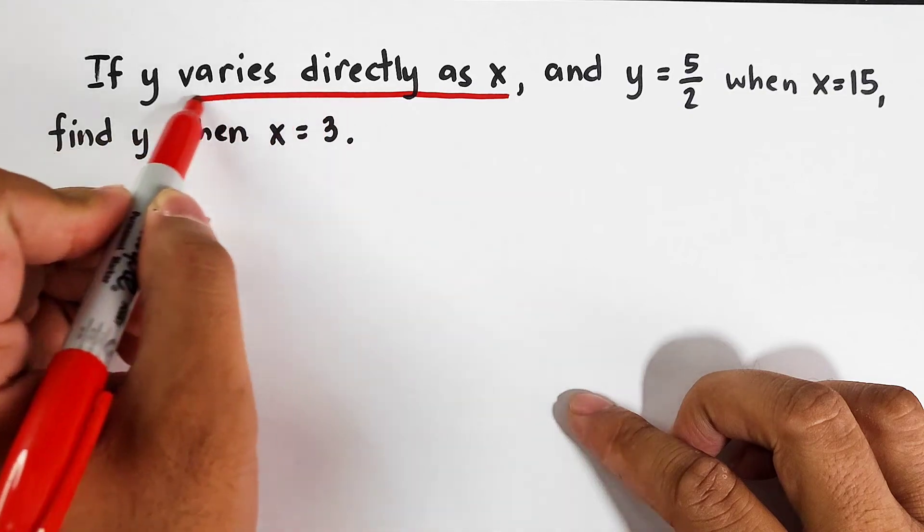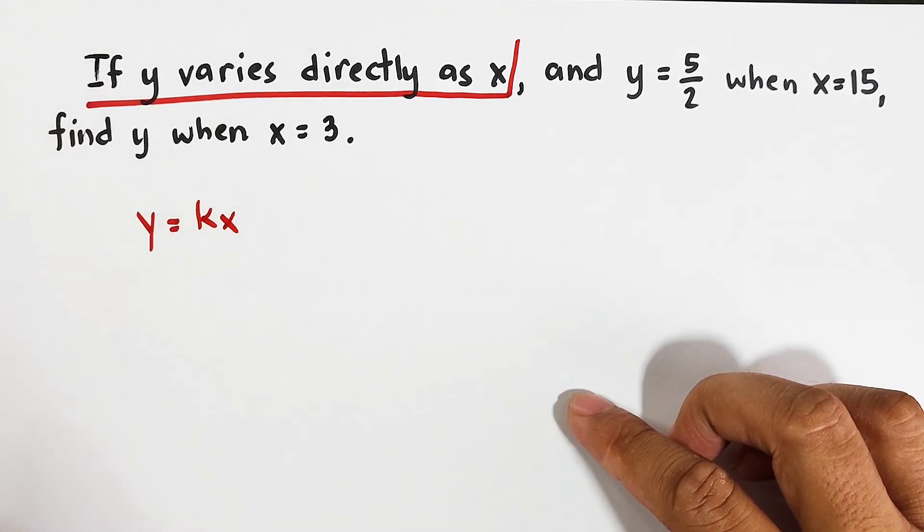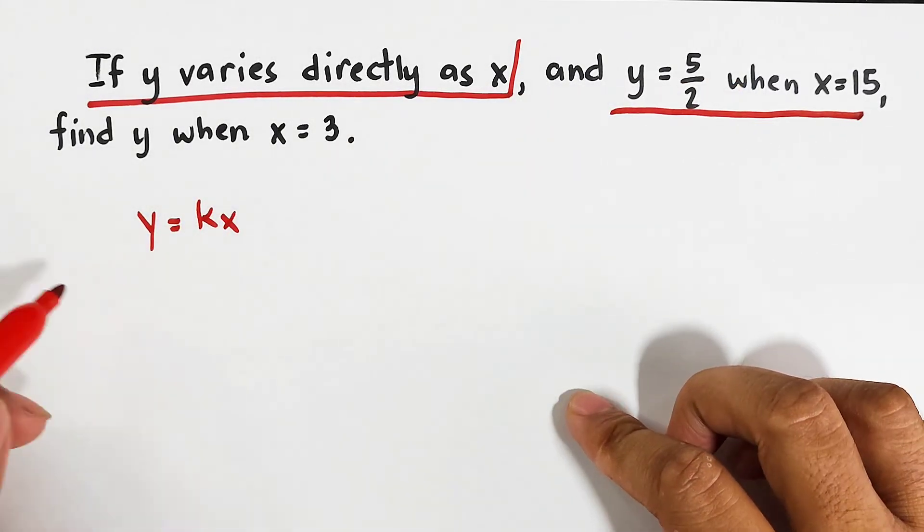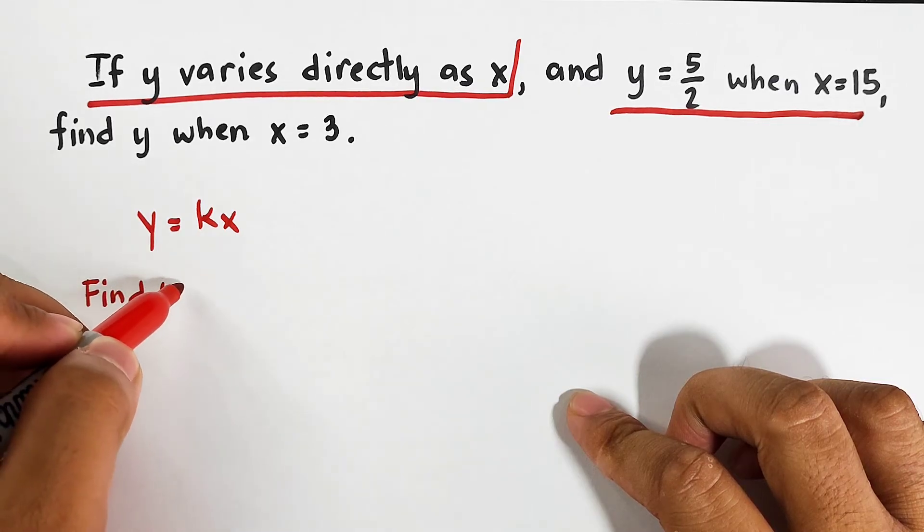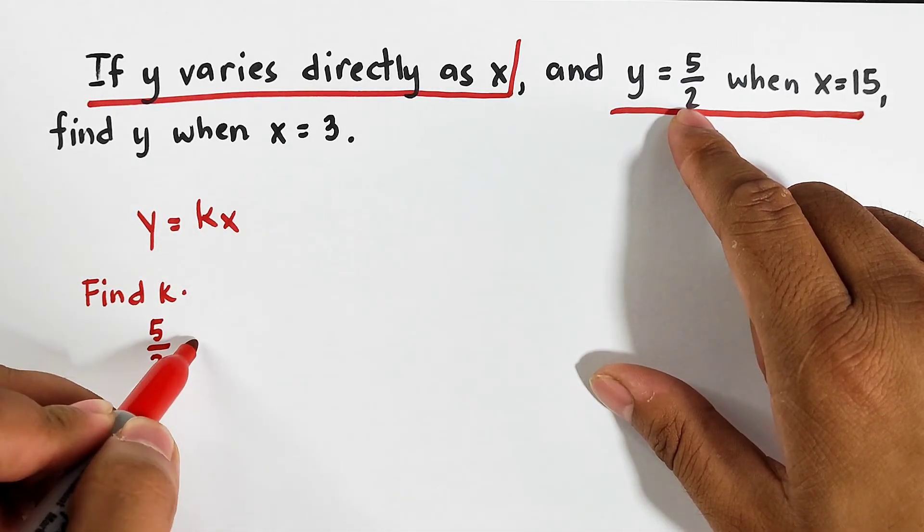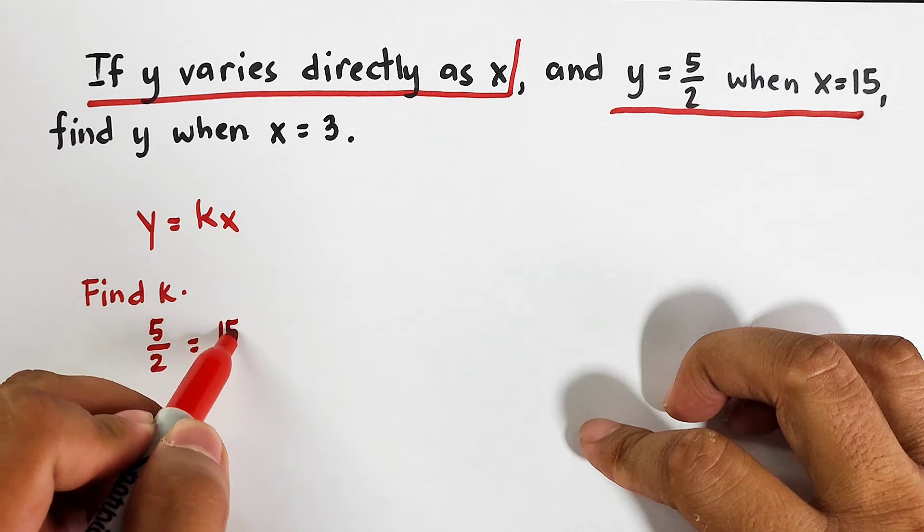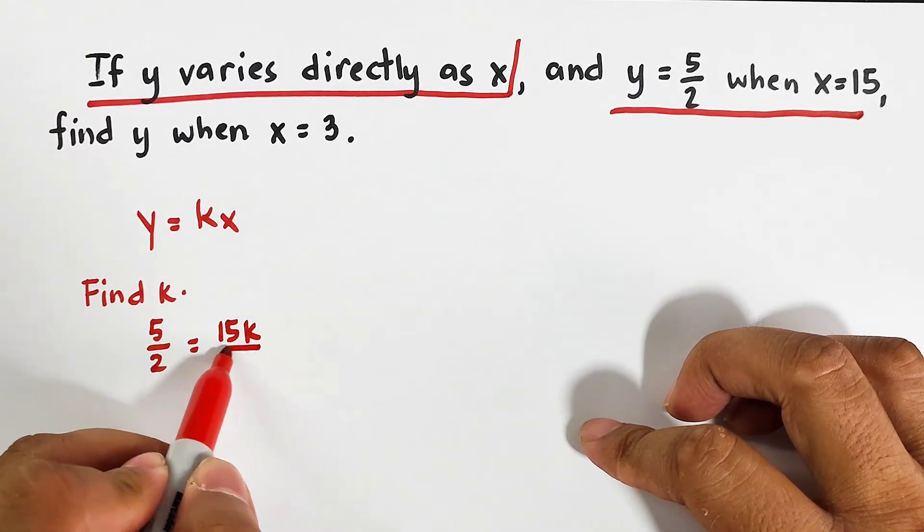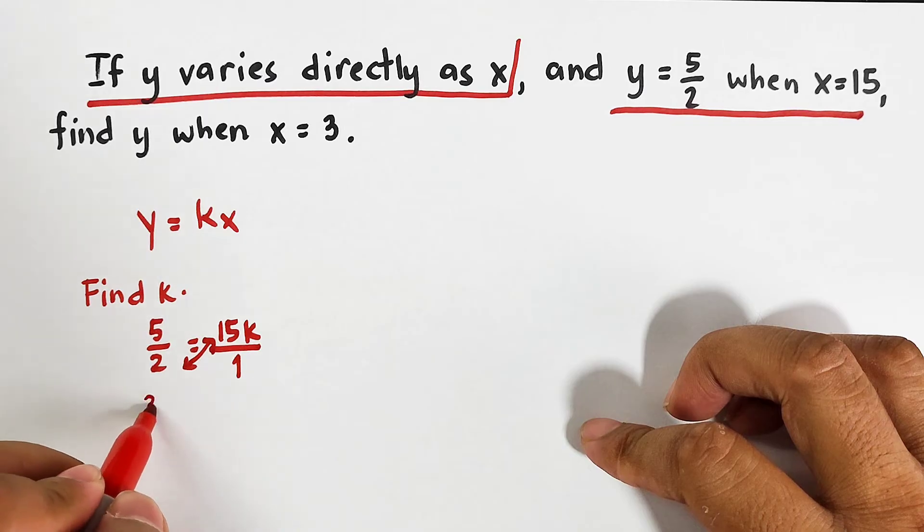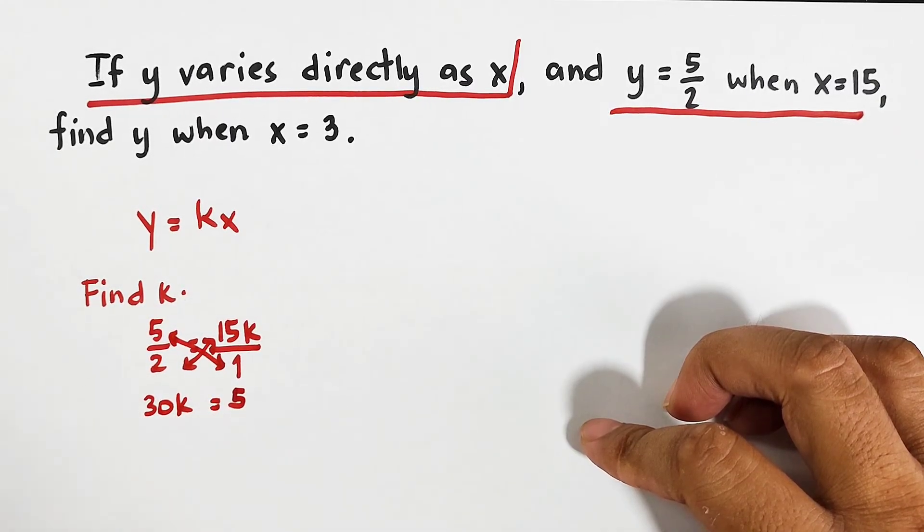So we will start first using our chop-chop method. This one. That is y is equal to kx. Then, this part will serve as numbers to find the value of k. So we will find k. Substitute. Your y is 5 over 2. This is 5 over 2. Is equal to... Your x is 15. 15 times k is 15k. Now to solve it, we can cross multiply this one. 2 times 15k is 30k. Then 1 times 5 is equal to 5.